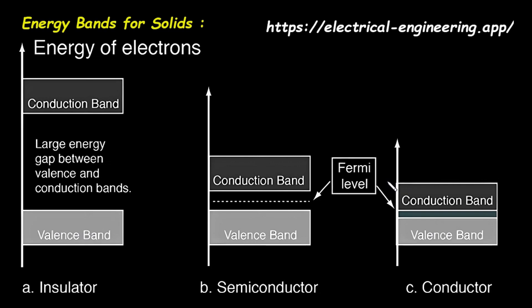Let's begin by looking at the overall image. It shows three different scenarios, labeled A, B, and C, which correspond to an insulator, a semiconductor, and a conductor.